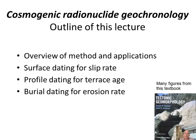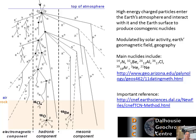The next dating method is called cosmogenic radionuclide geochronology, or COSMO. I'll do a quick review of the method and applications, and then show three examples: surface dating for slip rate, profile dating for terrace age, and burial dating for erosion rate. Most of this comes from the tectonic geomorphology textbook.